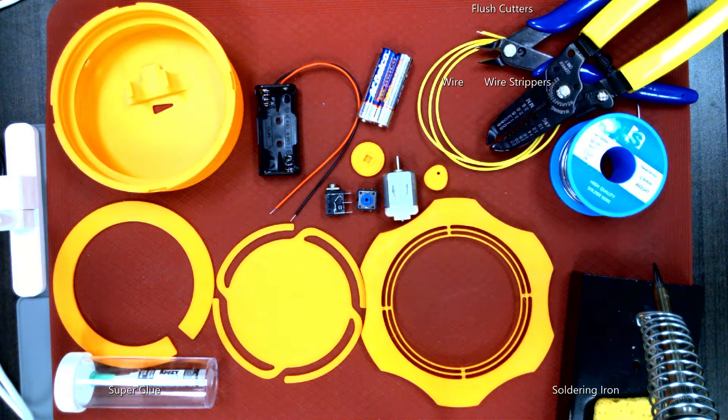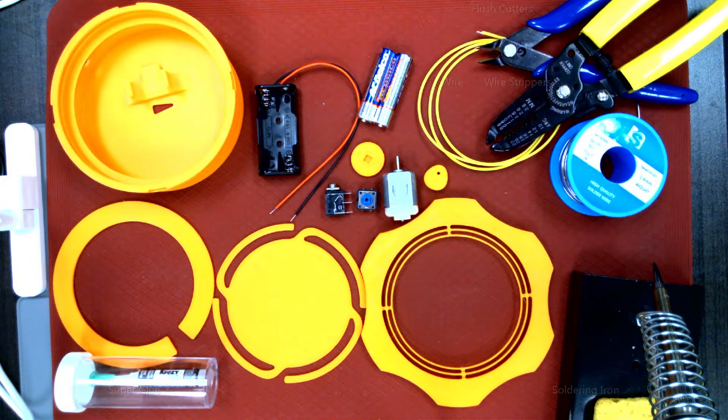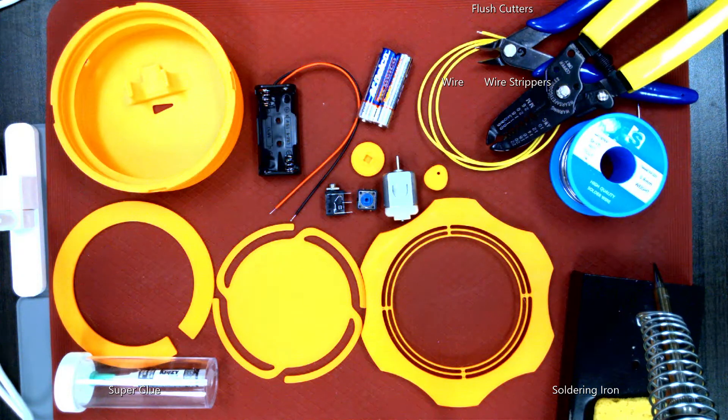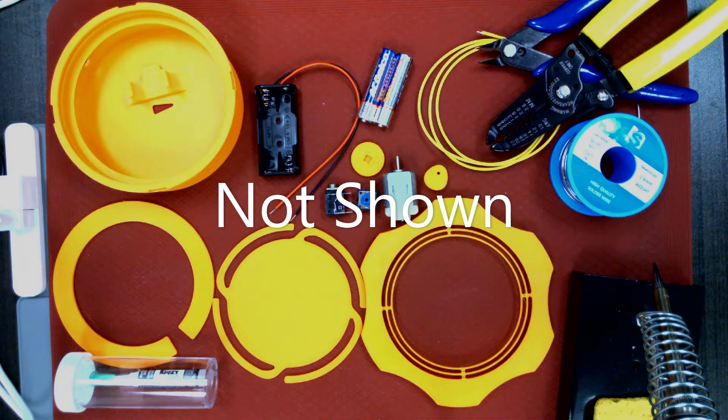For tools and build supplies, you'll need some super glue, wire, wire strippers, flush cutters, solder, a soldering iron, and optionally, velcro and a hot glue gun.